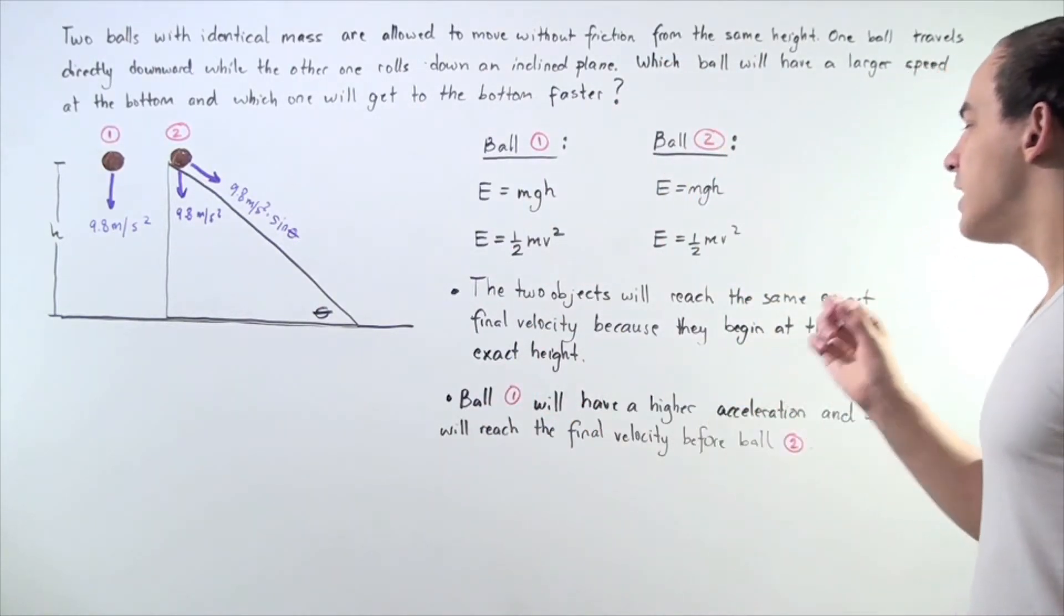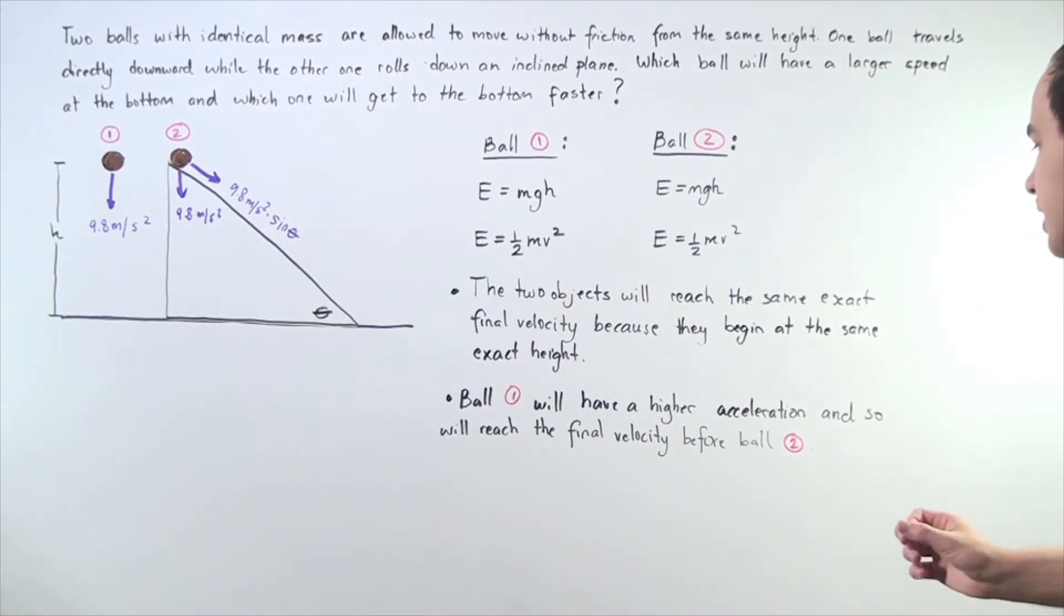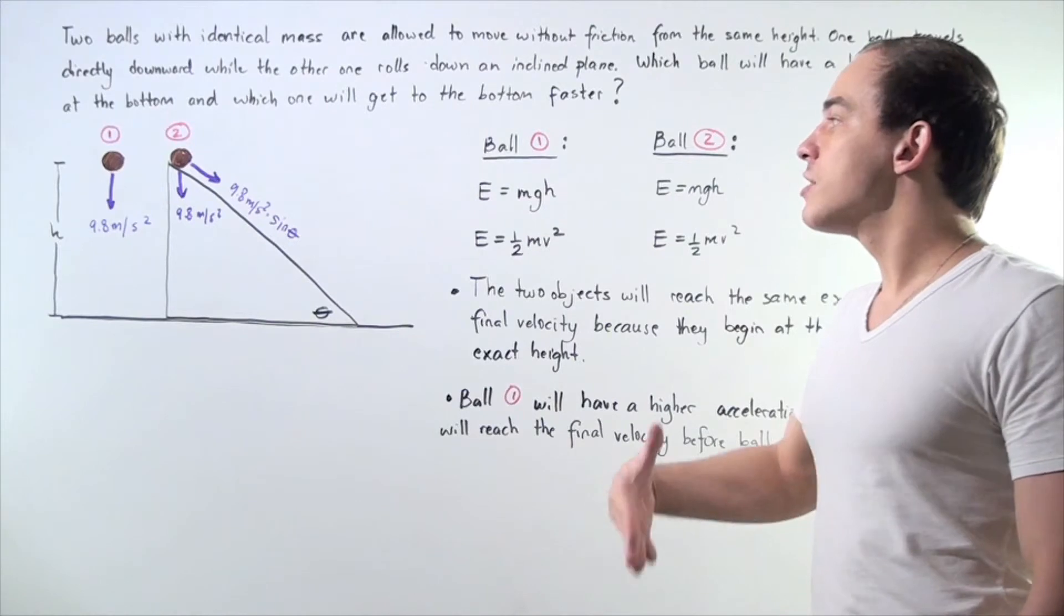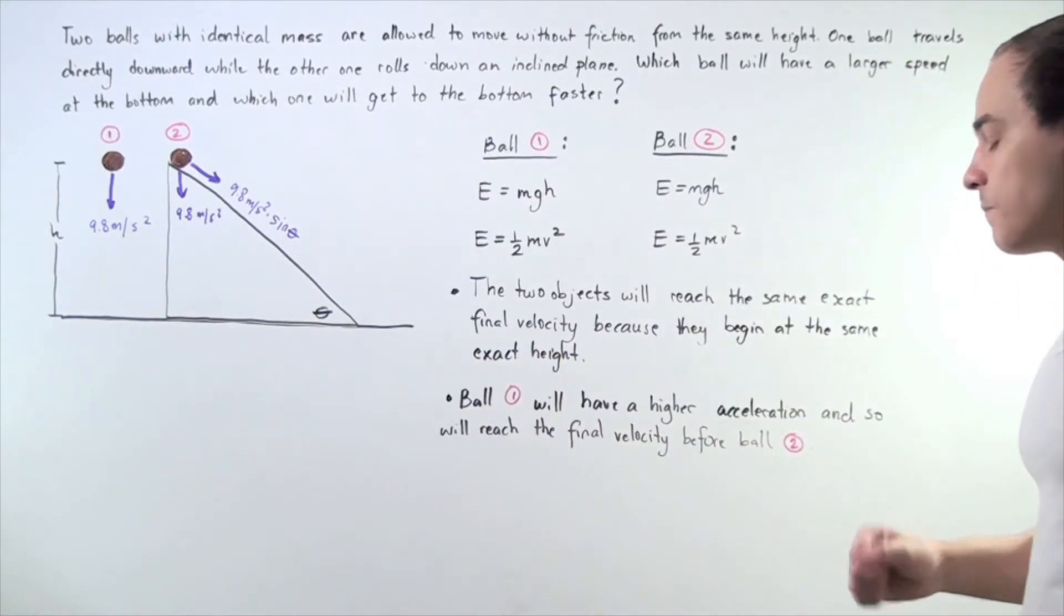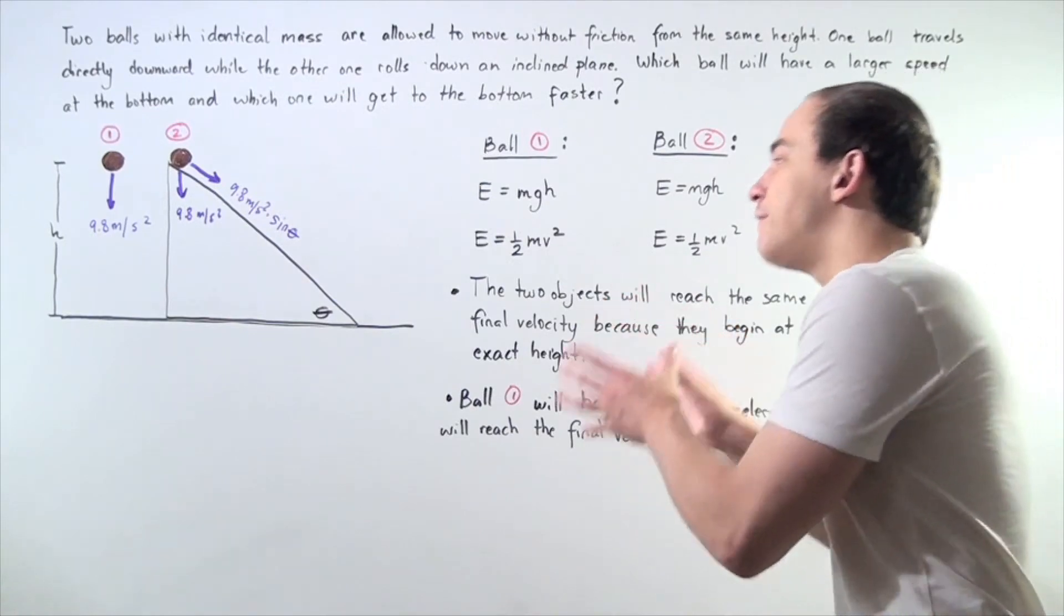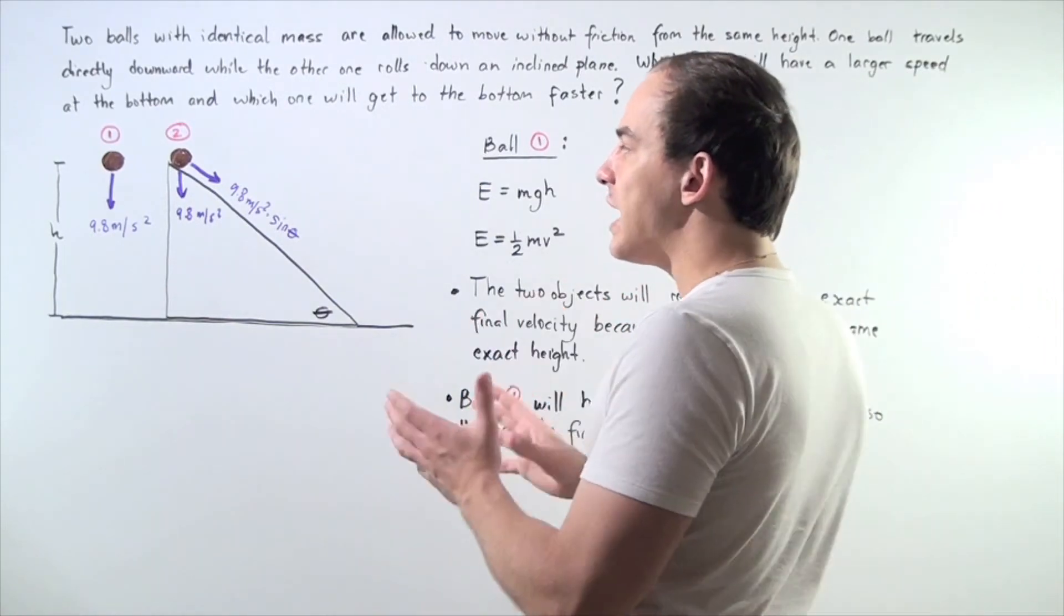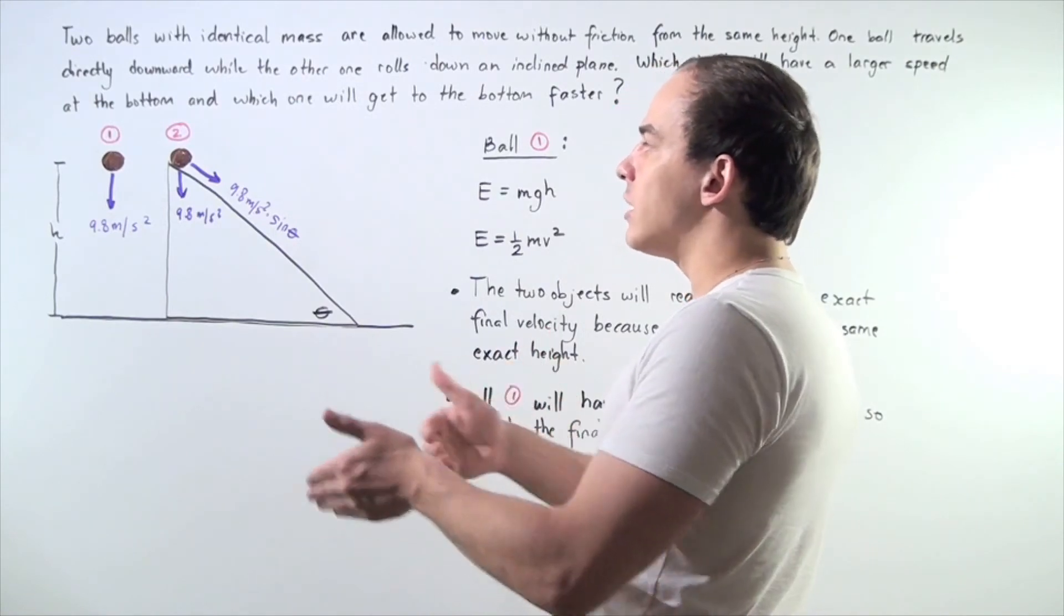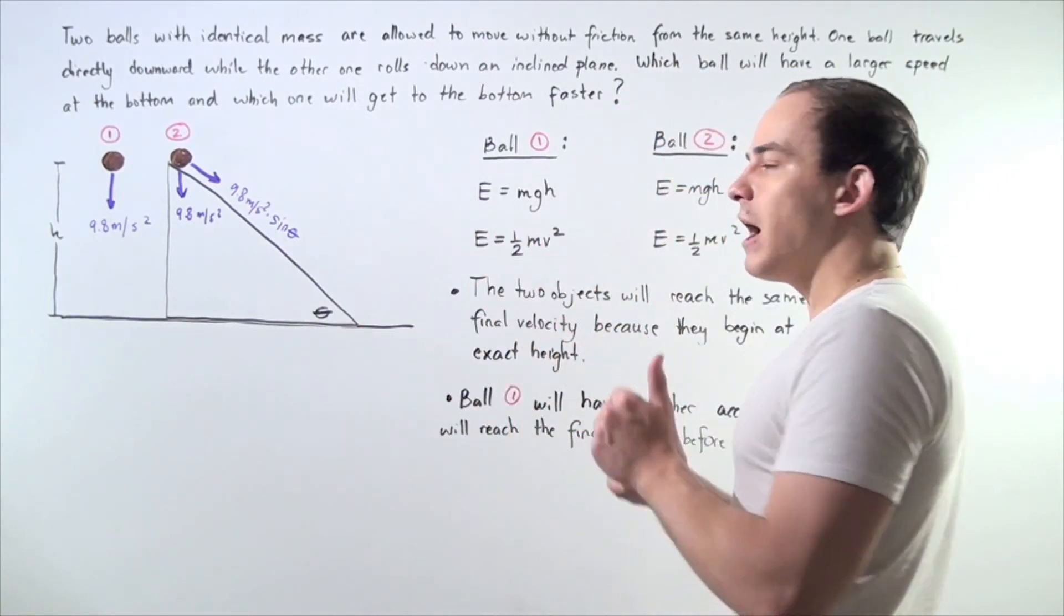And so, will reach the velocity, the final velocity, faster. So, even though the two objects will have the same exact final velocity, they will have completely different time periods that will allow them to reach that final velocity.